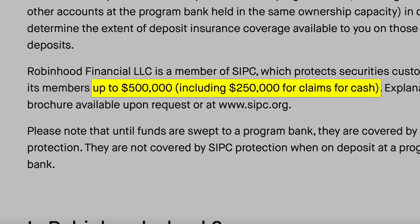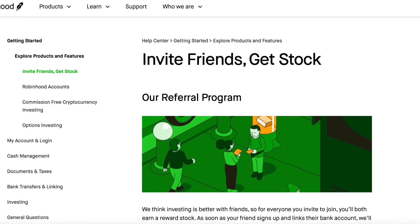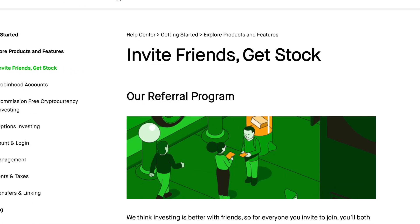Robinhood is a pretty full-featured brokerage. Behind the scenes, the app is protected by the Securities Investor Protection Corporation, which will protect up to $500,000 in assets or $250,000 in cash. You also get their famous one free stock when you sign up, which is probably part of the reason they've grown so quickly on social media from different people sharing their referral links.